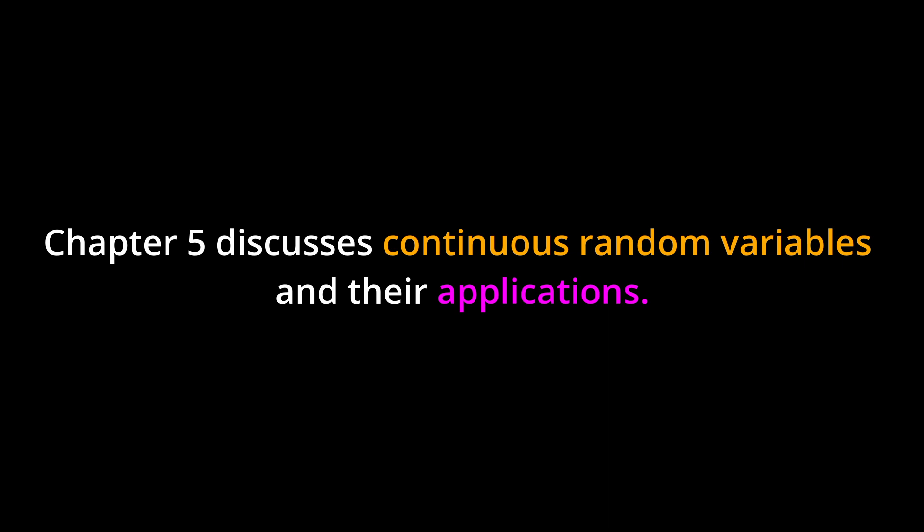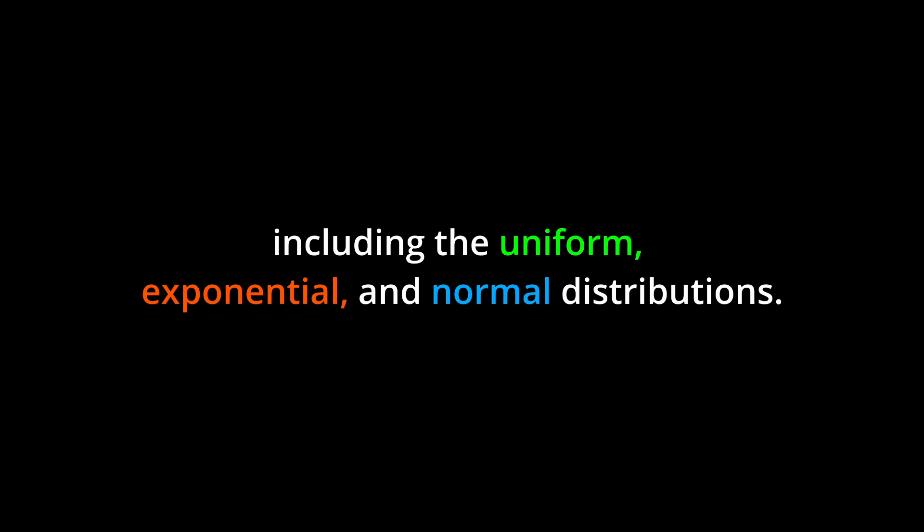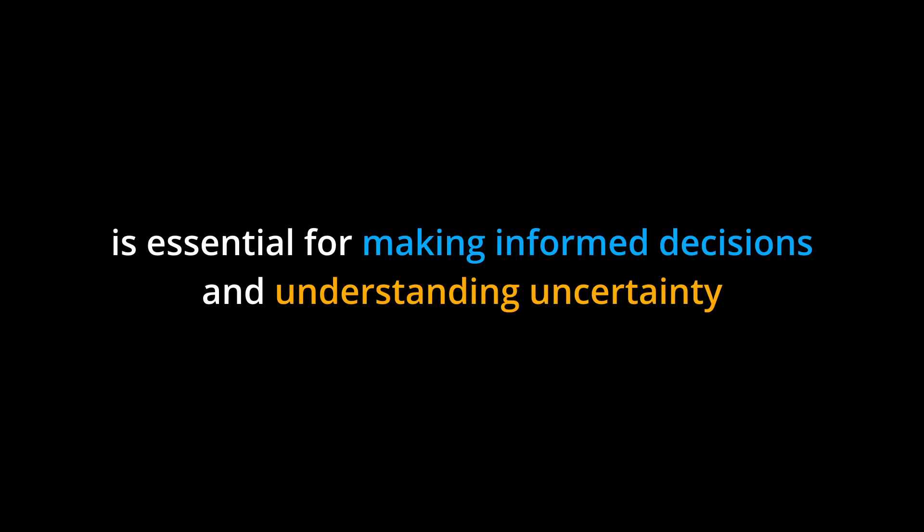Chapter 5: Continuous Random Variables Introduction. Chapter 5 discusses continuous random variables and their applications. It explores the properties of continuous probability distributions, such as the probability density function and the cumulative distribution function. The chapter also introduces various examples of continuous probability distributions, including the uniform, exponential, and normal distributions. Understanding continuous random variables is essential for making informed decisions and understanding uncertainty in fields such as finance and statistics.